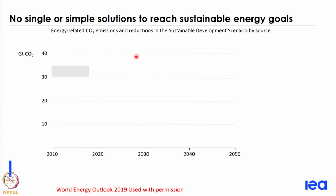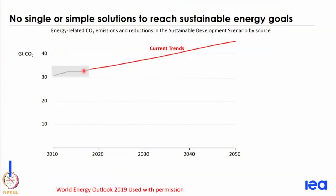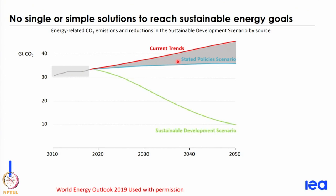The IEA basically says there are no single or simple solutions to reach the sustainable energy goals. If you look at the current trend in terms of emissions from 2010 to 2018 and project that into the future, this is the trajectory of CO2 emissions. With the stated policy scenario, we will go below current trends because of the policies put in place for the Paris commitments and local national commitments, but in order to go to the sustainable development scenario, we have to go much, much further below. This is the biggest challenge.